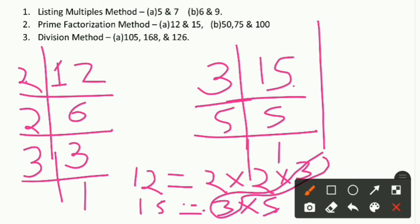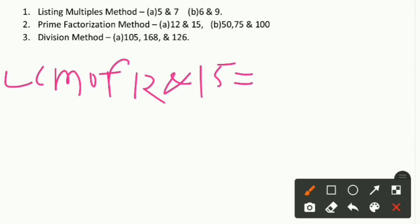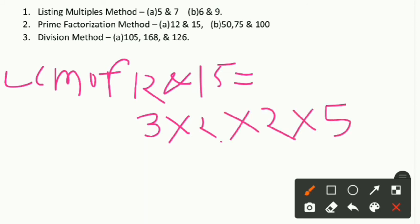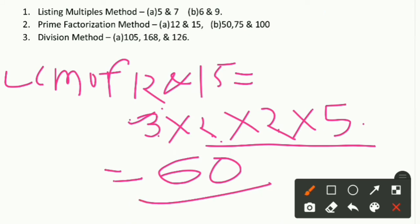The LCM of 12 and 15 is calculated as follows: the common factor pair is 3, so write 3 first. Then write the remaining factors: 2, 2, and 5. Now multiply all: 3 × 2 = 6, 6 × 2 = 12, 12 × 5 = 60. So the LCM of 12 and 15 is 60.